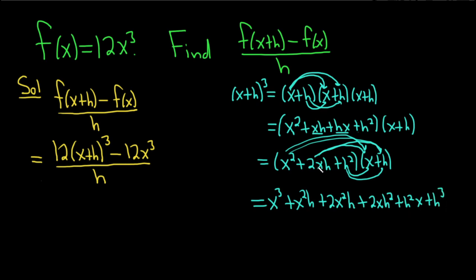I'm trying to see if we can simplify anything here. I think we can. Look, there's an x squared h here. There's a 2x squared h here. So we can combine those, okay? So this is going to be x cubed. There's really an invisible 1 here. So 1x squared h plus 2x squared h is 3x squared h.